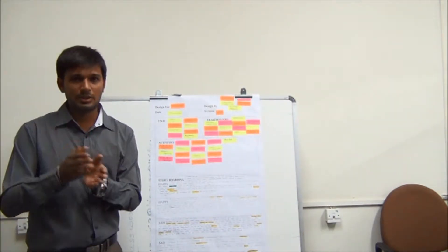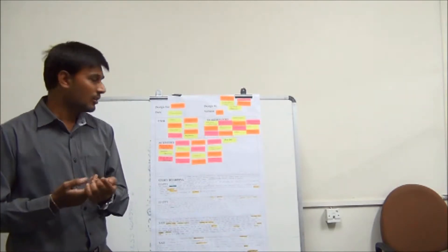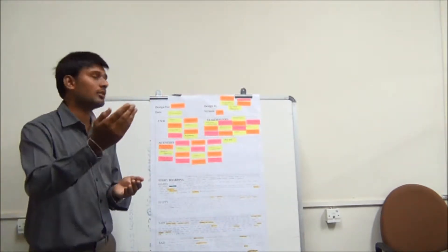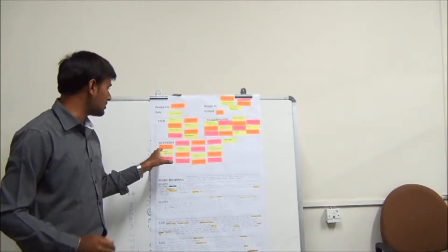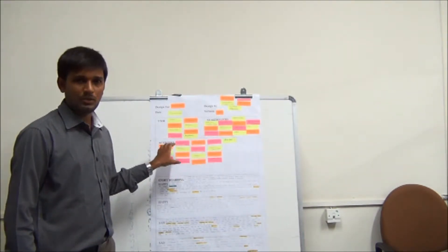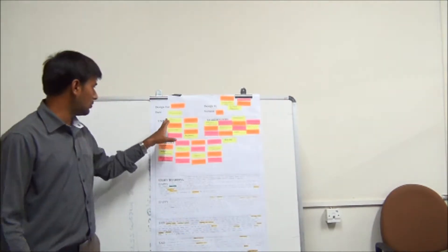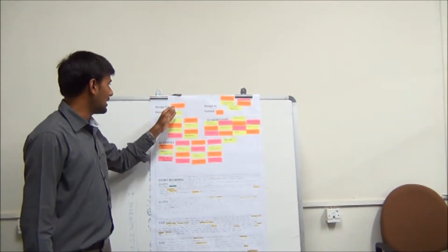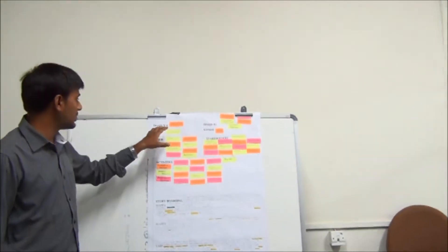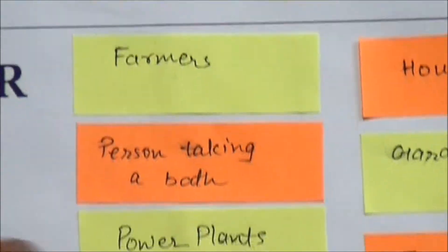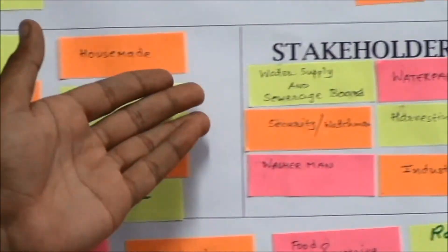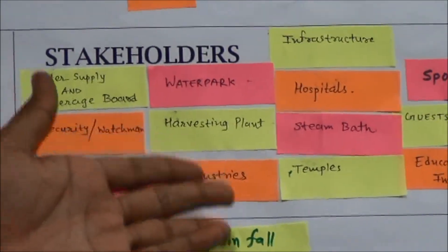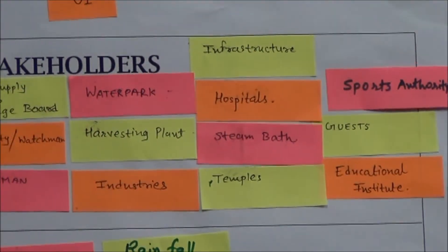After making the questionnaires and interviews, we can determine what activities the user is doing in life, and list those activities. For my design, I am taking the subject of usage of water. For water, the users can be a farmer, housemate, gardener, trees, swimmer, etc. The stakeholders include washermen, industries, temples, sports authorities, hospitals, etc.